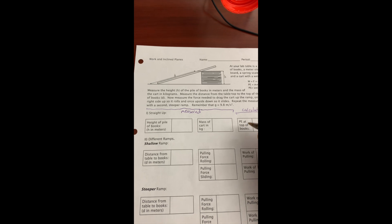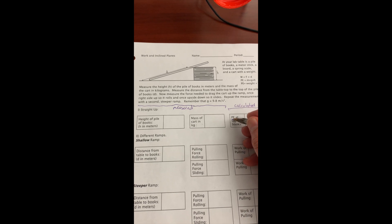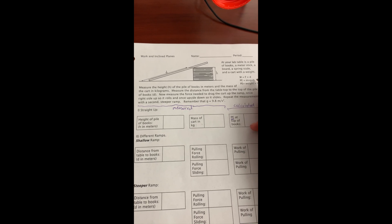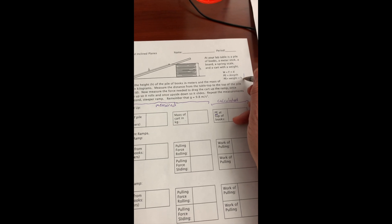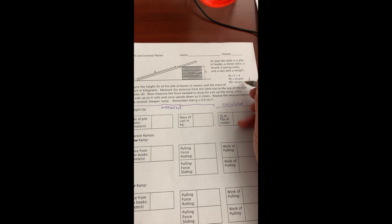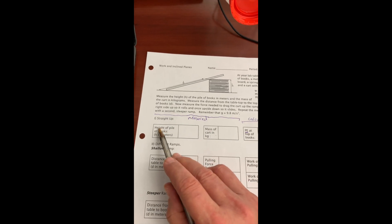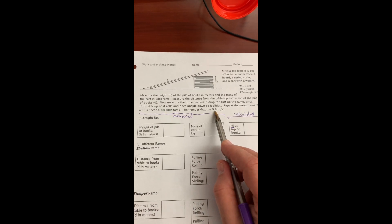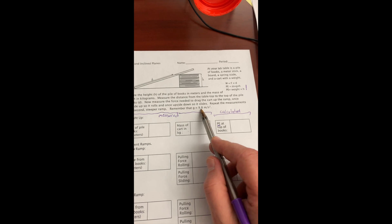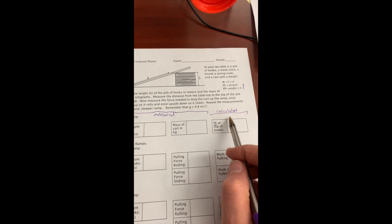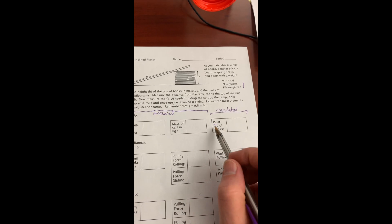Now, up here, it says you're calculating the potential energy. Well, we have two equations for potential energy up here. One of them has mass, gravity, and height. The other just has weight and height. Well, if you look, we calculated the mass, we have the height, and I've given you the constant for gravity. So that should tell you how you're going to calculate which equation you'll use to calculate the potential energy.